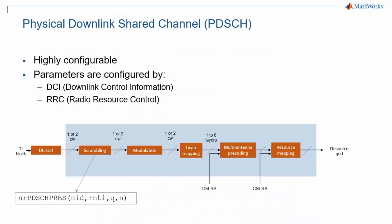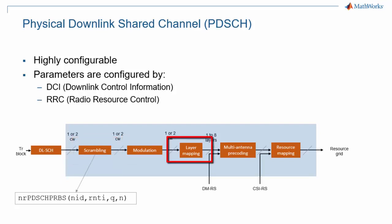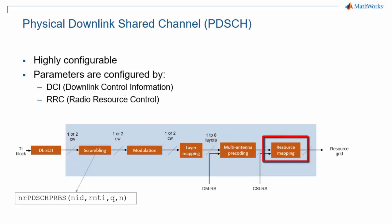The physical downlink shared channel is highly configurable, much more so than in LTE, and we will see some of the detail on the next slide. It is configured both by downlink control information, which can change from slot to slot, and radio resource control, which can set up some parameters as well. There isn't much of a surprise here compared to LTE — we find scrambling, modulation, layer mapping, precoding for MIMO processing, and resource mapping.